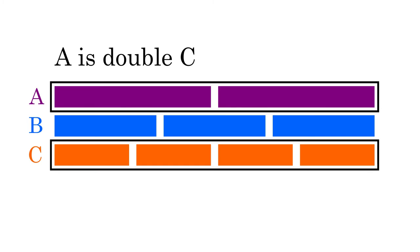Therefore, the duple interval is composed of the two largest epimorics, the hemiolic and the epitritic.